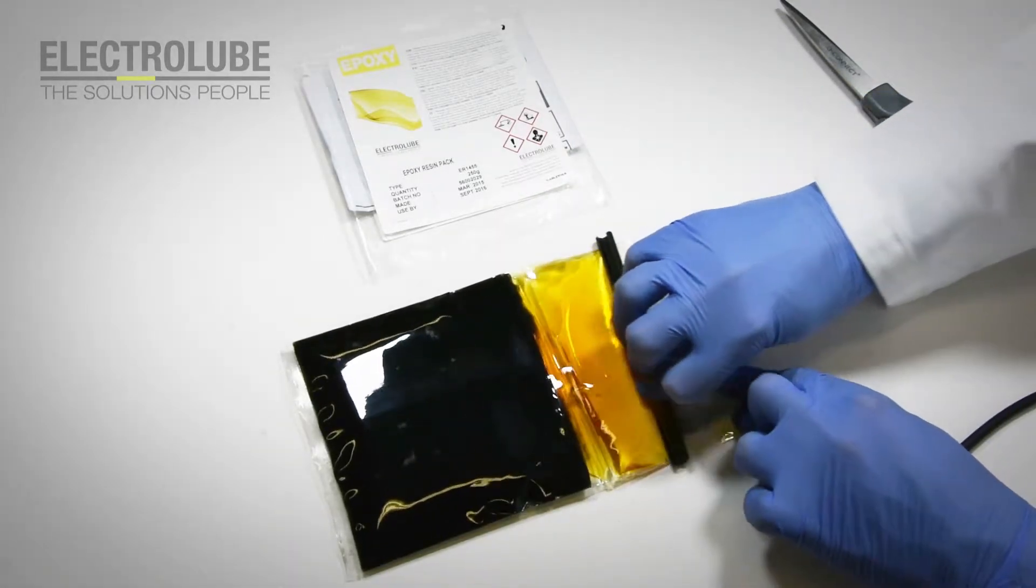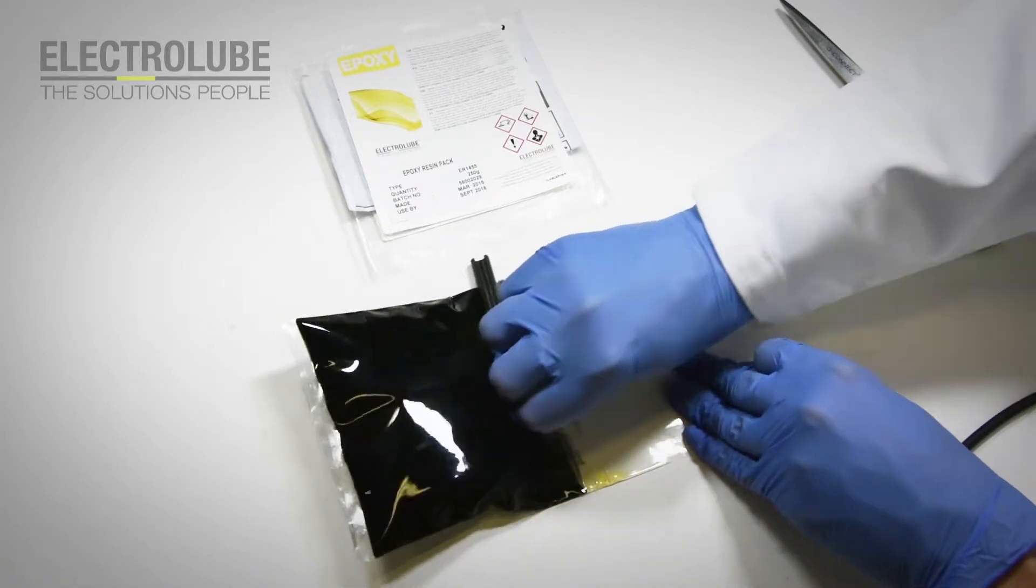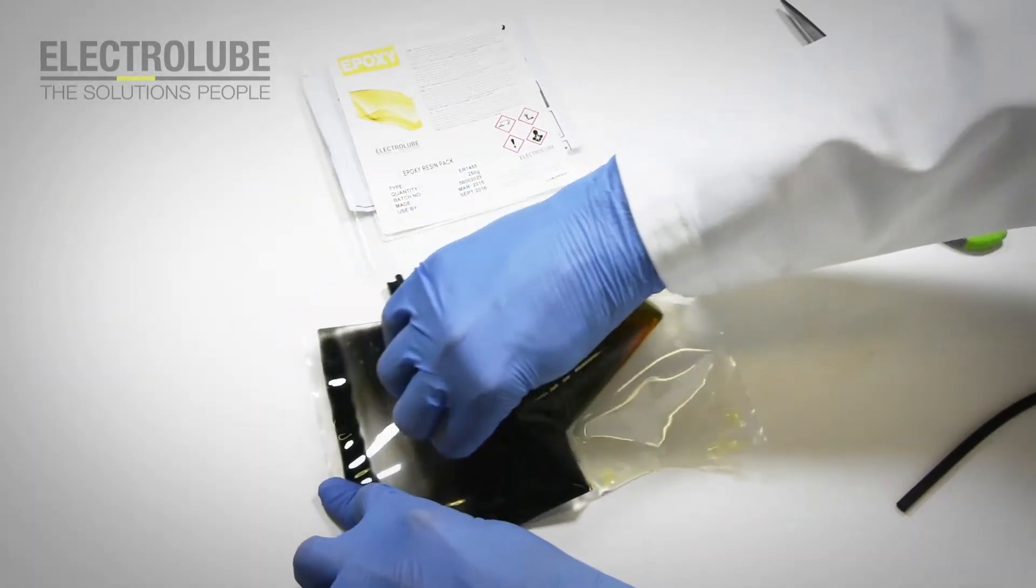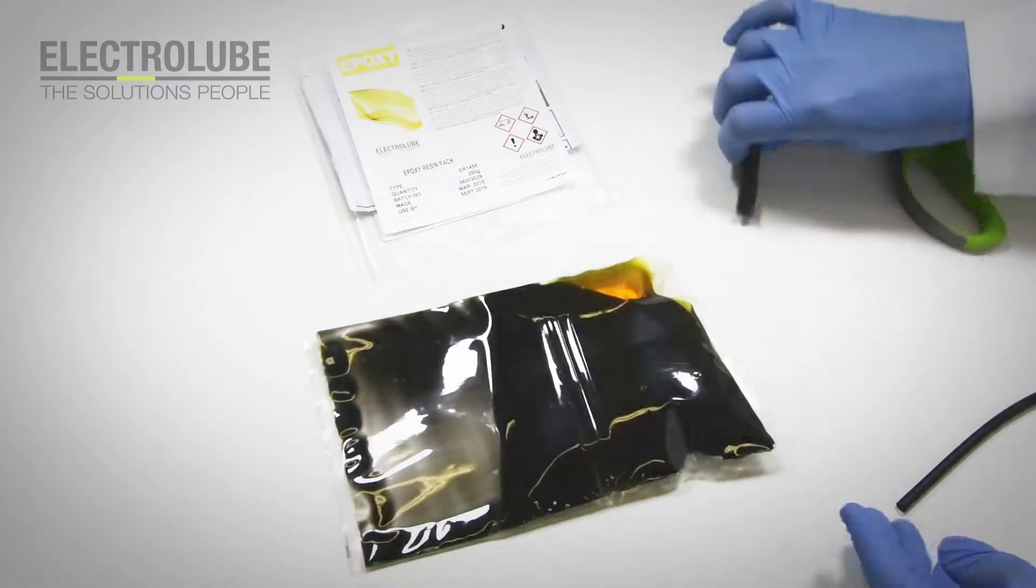Using the removed clip, push all of the part B into the part A section and begin mixing by moving the resin around in the bag with your hands.